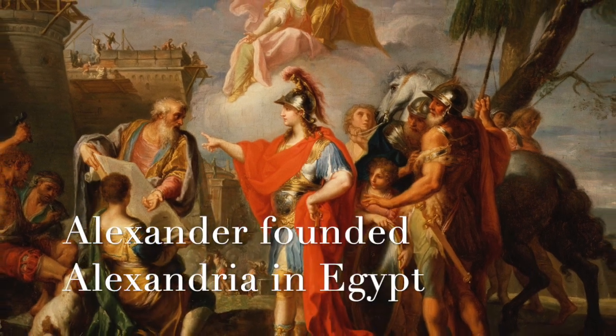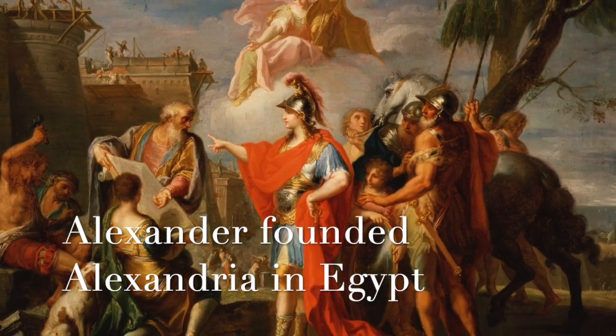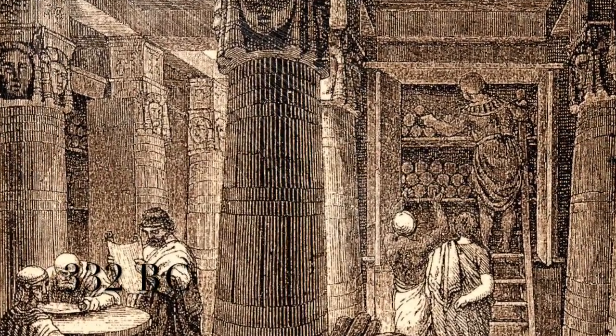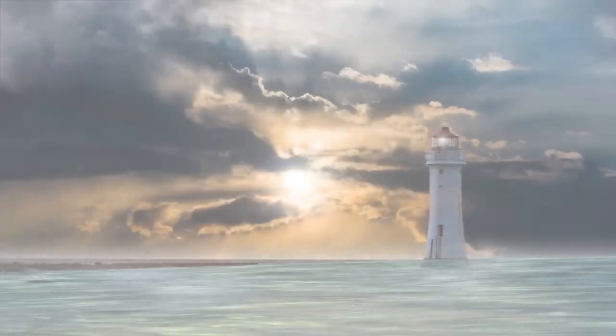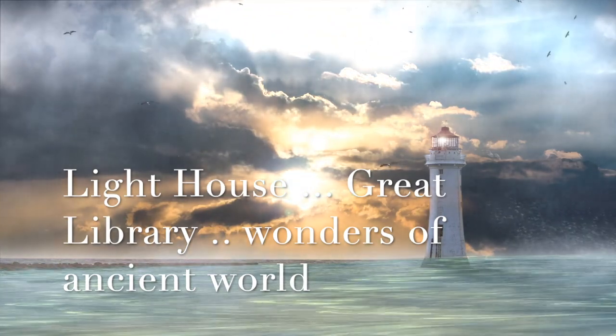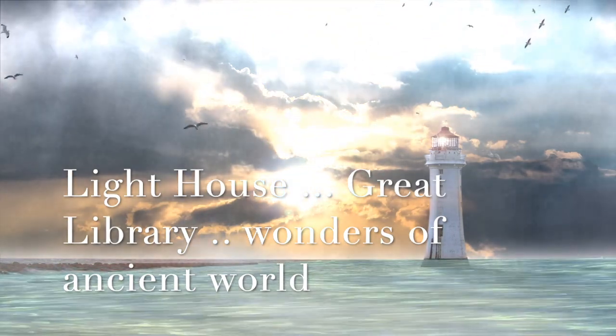Alexander the Great founded Alexandria in Egypt. This was in the year 332 before Christ. Since then, Alexandria became one of the most important cities of the world. It had the lighthouse, the great library, these were the wonders of ancient world.